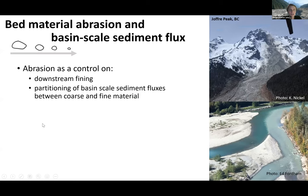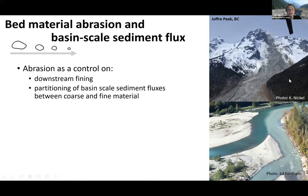Bed material abrasion is the process of bed load reducing in size as it moves along the river bed, and it's often considered through the lens of downstream fining down river networks. But today, I want to think about it in terms of how it controls the partitioning of basin scale sediment fluxes between coarse and fine material. Abrasion is an important piece of the puzzle in source-to-sink sediment dynamics — how a landslide will turn into either a morphologically benign plume of silt, or a problematic wave of aggradation that could increase flood hazards or change channel morphology.